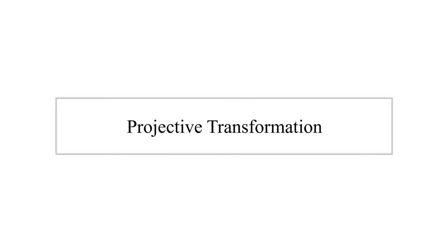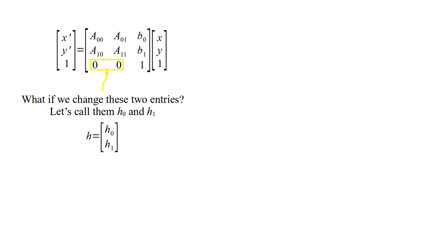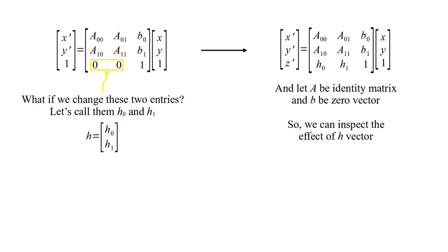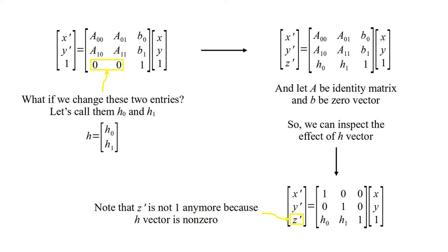Projective transformation. What if we change these two entries — let's call them H0 and H1. Let A be the identity matrix and B be the zero vector, so we can inspect the effect of the H vector. Note that Z prime is not 1 anymore because the H vector is non-zero.